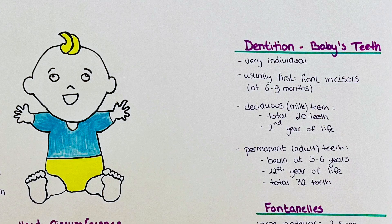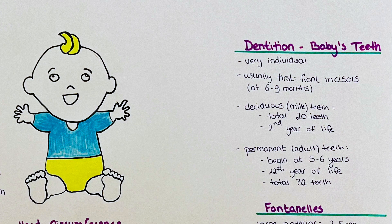Now next up I want to talk about dentition or the teeth, which is very very individual. So there are big variations from child to child. Most often the first teeth to appear are the front incisor teeth and usually they appear at about 6 to 9 months of age.